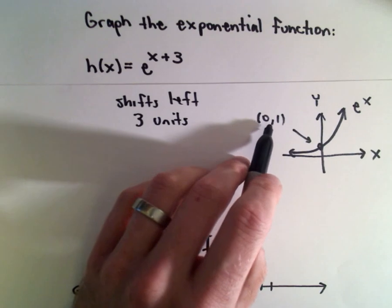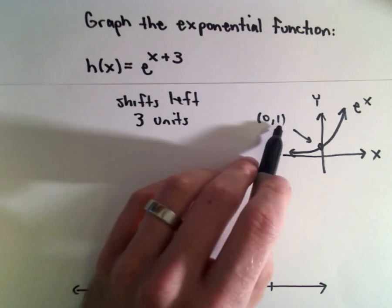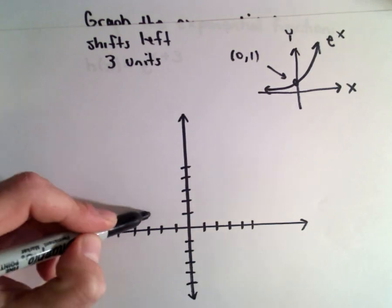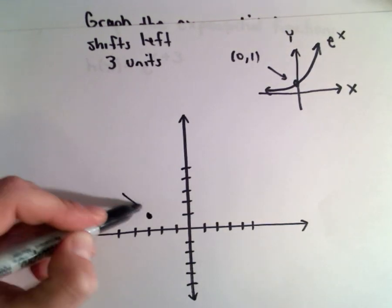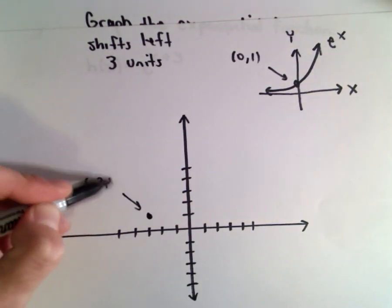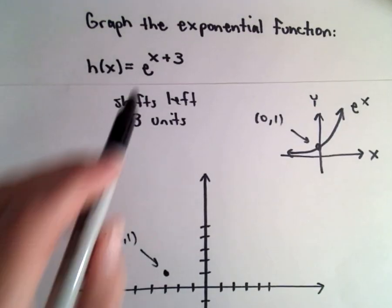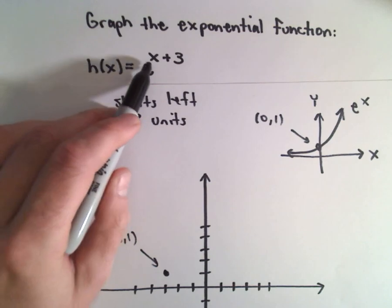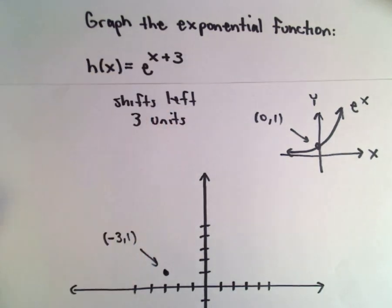So that original point 0, 1, if I move it 3 units to the left, that'll now be the point negative 3 comma 1. And notice that makes sense. If you substitute in x equals negative 3, we'll get e to the power of 0, which is 1.